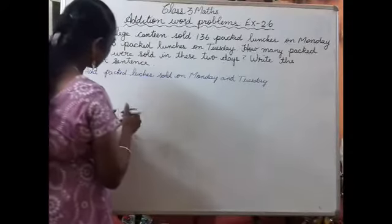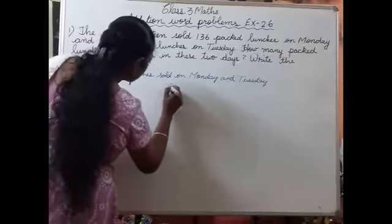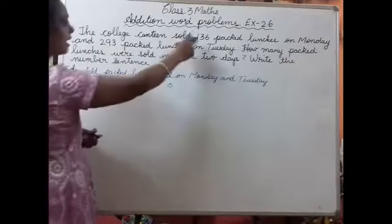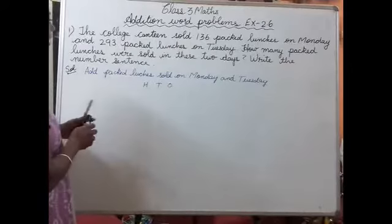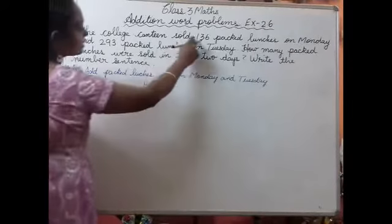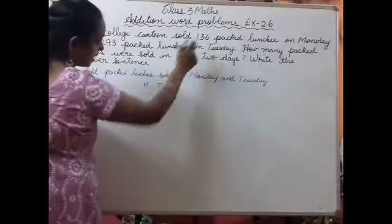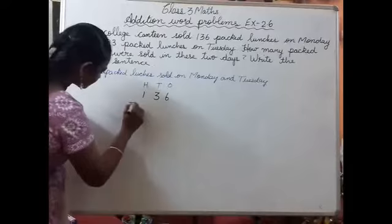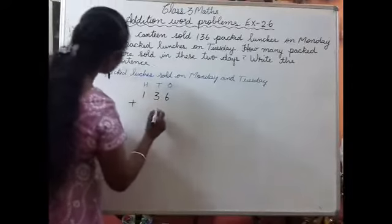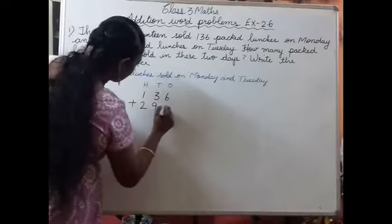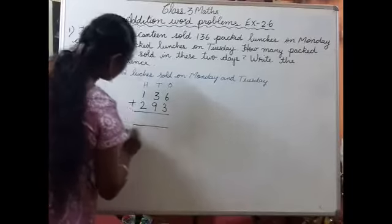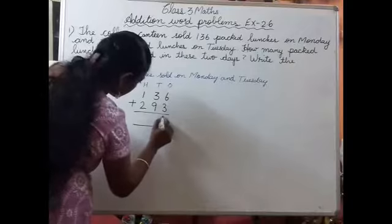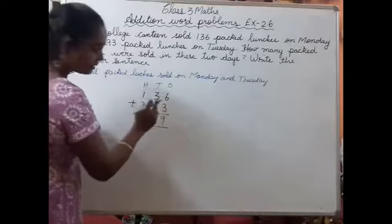First you have to write ones, tens, hundreds - three digit numbers are there. We have to write the number of packets sold on Monday, which is 136, and number of packets sold on Tuesday, which is 293. Now you have to add. 6 plus 3 will be 9. 9 plus 3 is 12.